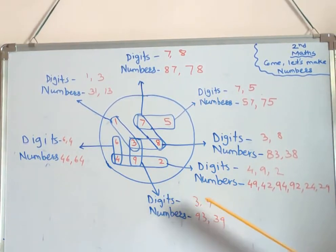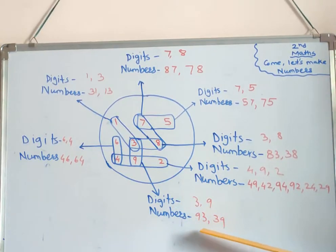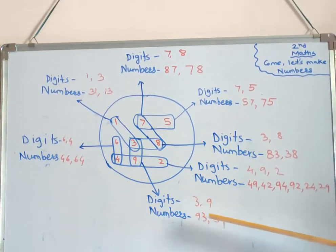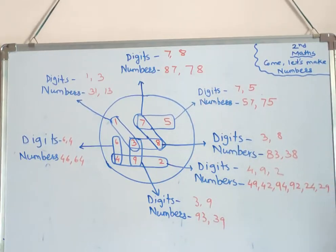Next digits are three and nine. Take three in the units place — ninety-three. Take nine in the units place — thirty-nine. So 93 and 39 are the two numbers formed from the digits 3 and 9.